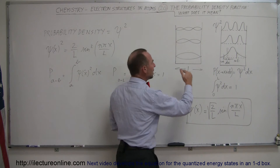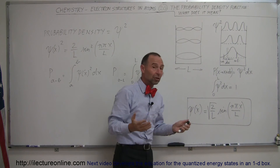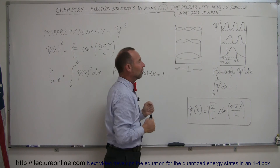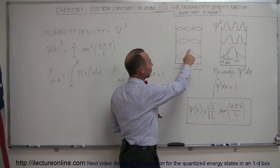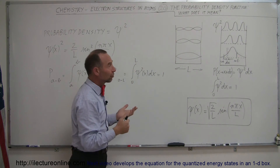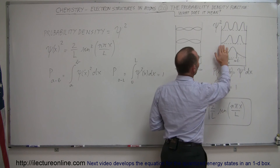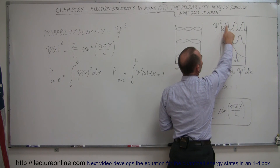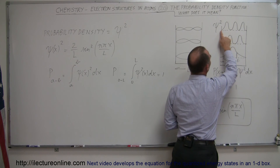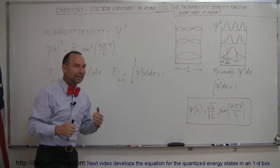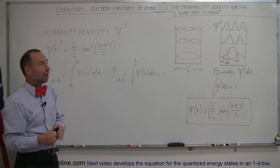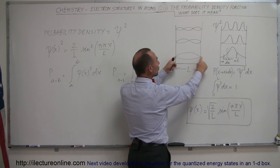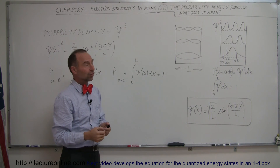If the electron goes to a higher energy state, its wave pattern changes to fit the dimensions of the box, and the corresponding probability density function changes as well. At the first excited state, there's high probability of finding the electron here or here, and zero probability at certain points. At the next higher energy state, the probability is high at three locations and zero at four others. This is analogous to the nodes and antinodes of a standing wave pattern — where there's an antinode, there's highest probability; where there's a node, there's zero probability of finding the electron.